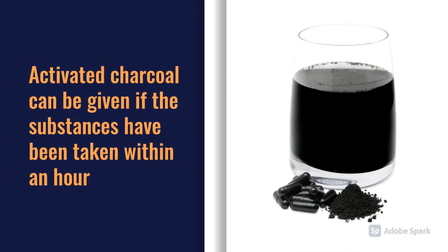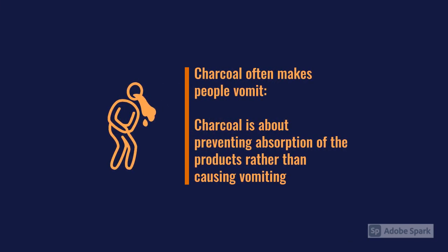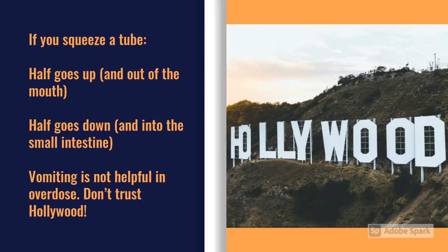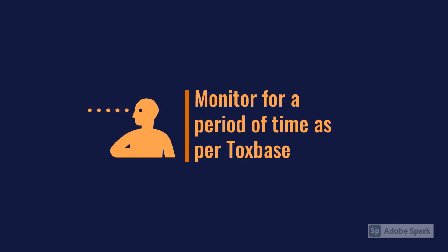Activated charcoal is given if the overdose was taken within an hour - it's a very black, sticky substance, and patients who've taken it are recognizable by the colour around their mouths. It often makes patients vomit, but the point isn't to induce vomiting - it's to absorb substances in the stomach and prevent absorption. Vomiting post-overdose is not actually helpful; when you vomit you're squeezing a long tube, propelling half the ingested substance further into the small intestine. Ignore Hollywood on this one.